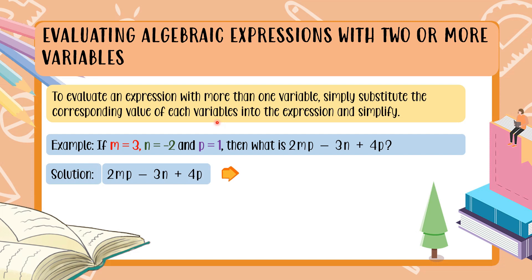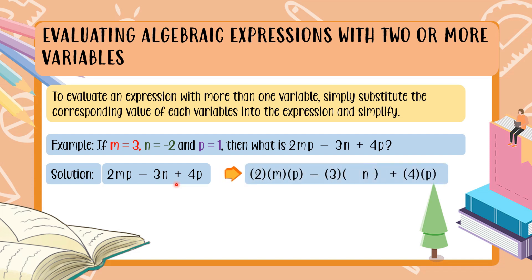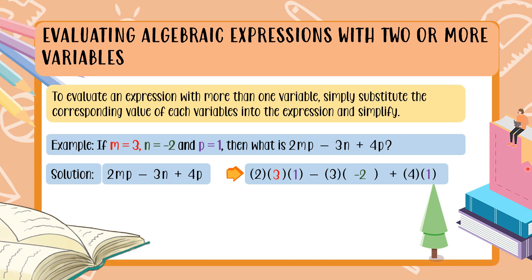This is the solution. We have 2mp minus 3n plus 4p. Let's expand it: 2 times m times p minus 3 times n plus 4 times p. We need to substitute the values — m becomes 3, n becomes negative 2, and p (which appears twice) becomes positive 1. Now that we have substituted the values, let us proceed to solving through order of operations — GEMDAS again.